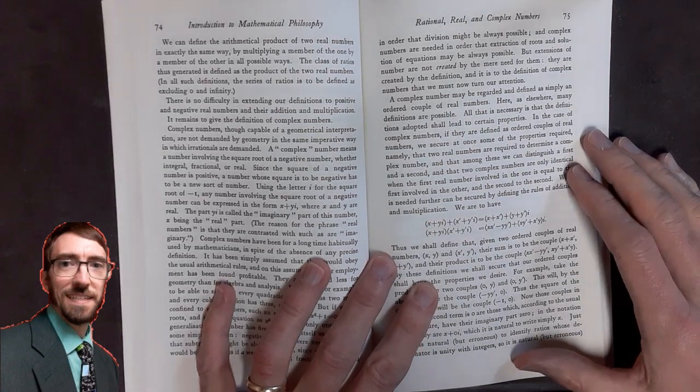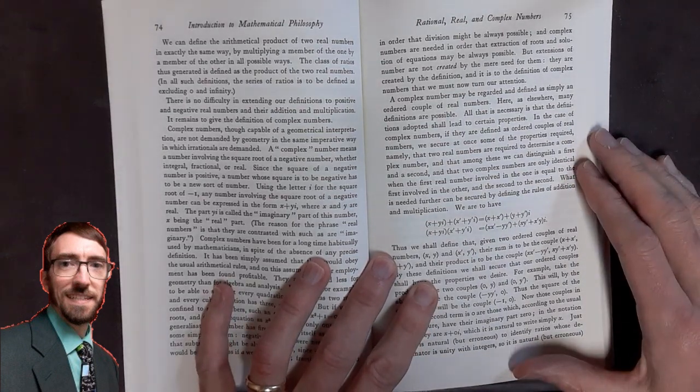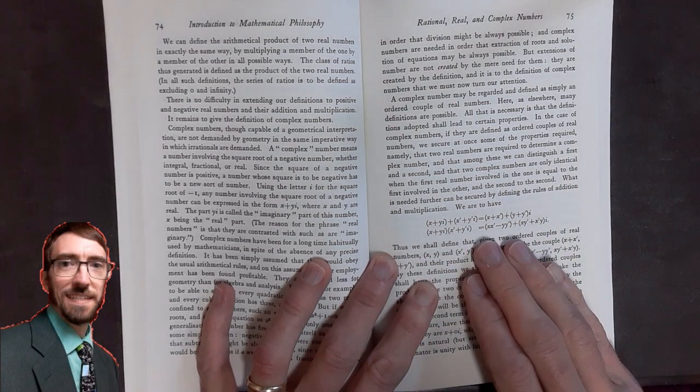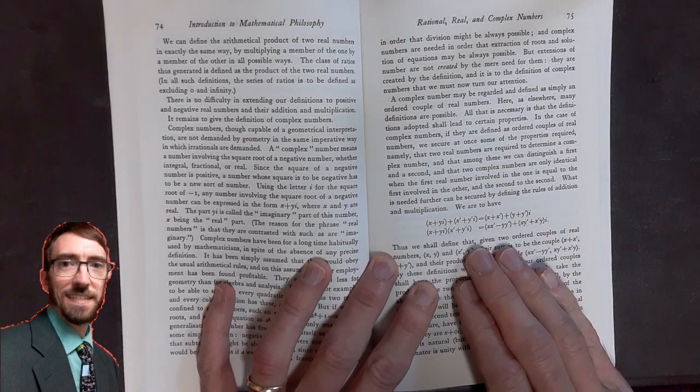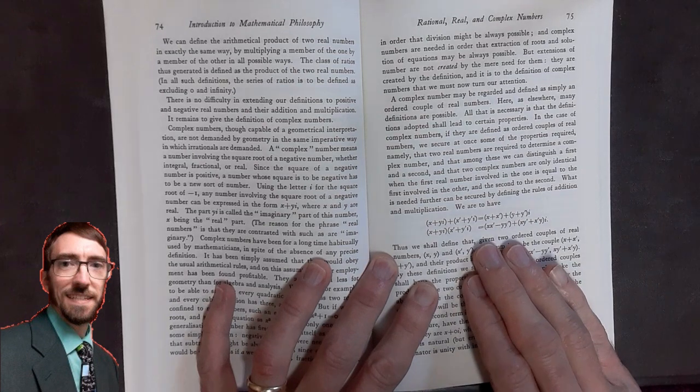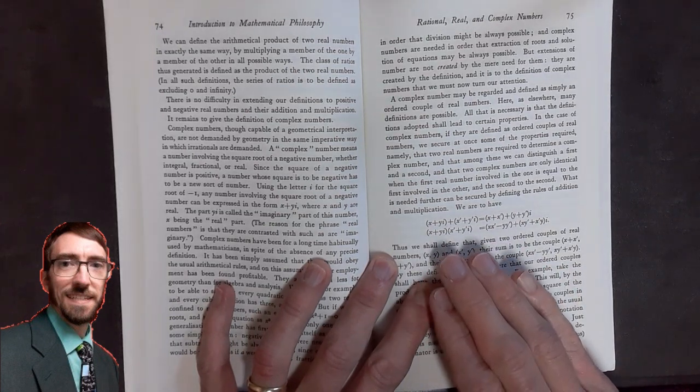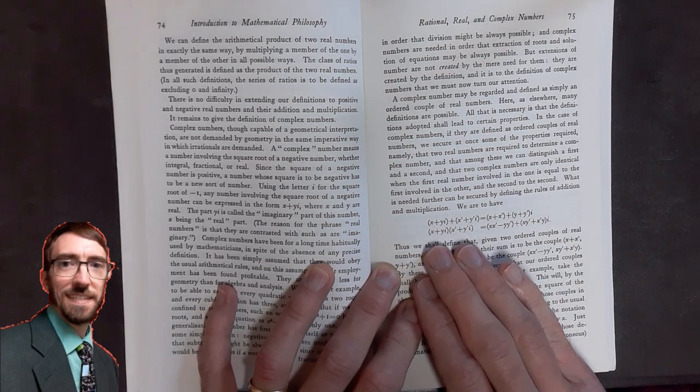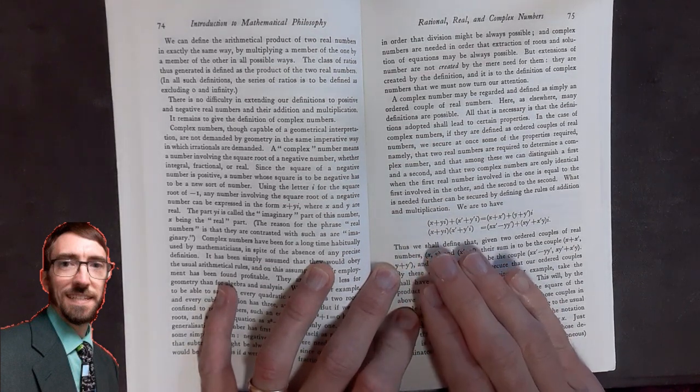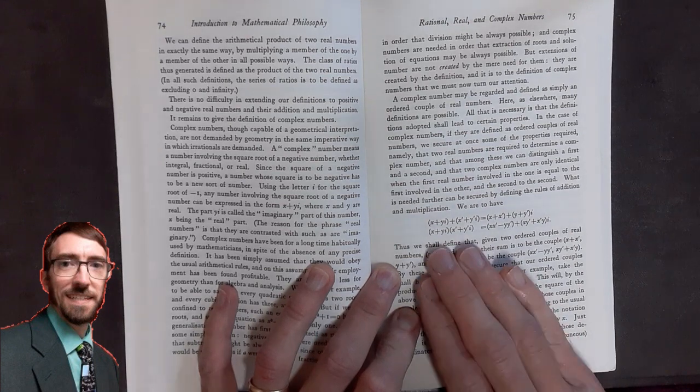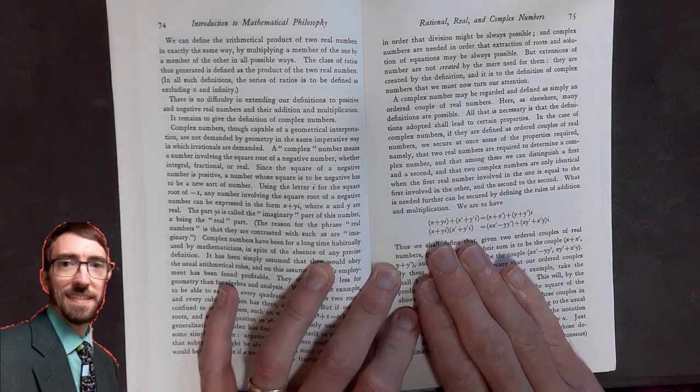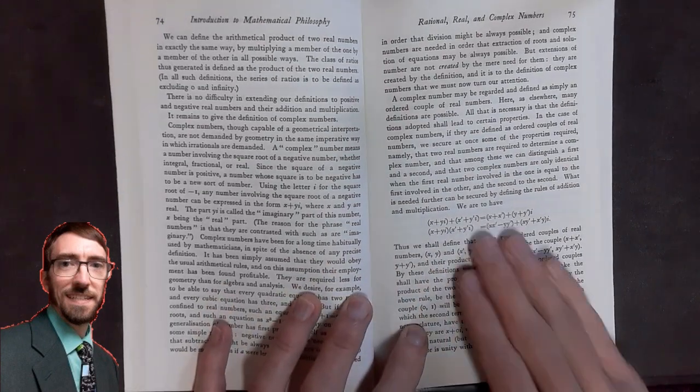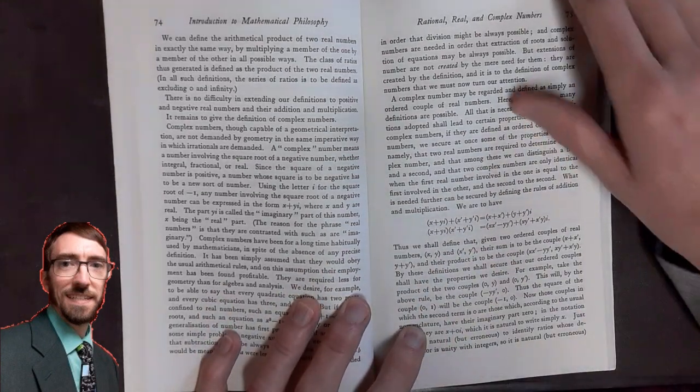In the rational, real, and complex numbers chapter, we see this development of the idea of addition and multiplication of complex terms. I don't know if everyone watching is familiar with this particular algorithm for multiplication. I've seen it in one of my graduate level classes. I'm not sure if I had seen it before that or not, but I see it in this text.